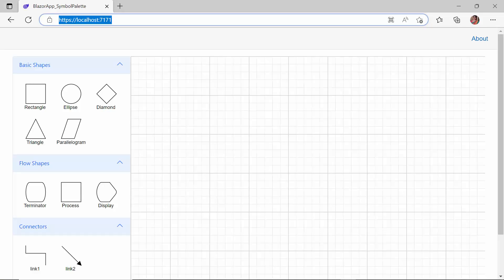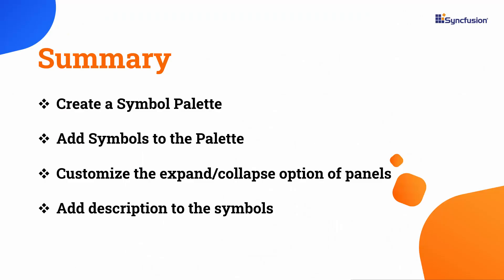In this video, you have seen how to create a symbol palette and add basic shapes, flow shapes, and connectors to it. You have also seen how to add descriptions to the symbols and customize them using symbolHeight, symbolWidth, and palette expand mode properties. If you would like to see the working example, you can download it from the GitHub link in the description below. I have also provided a link where you can see if you qualify for a free license key to use our Blazor products through our community license. If you found this video useful, like it and subscribe to our channel. Thanks for watching.